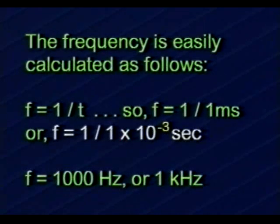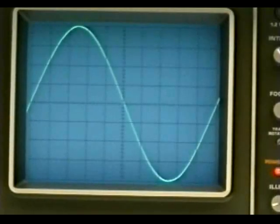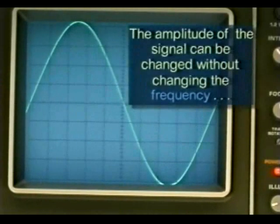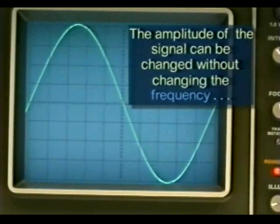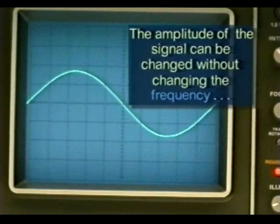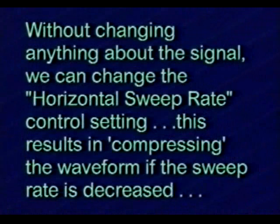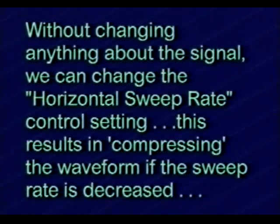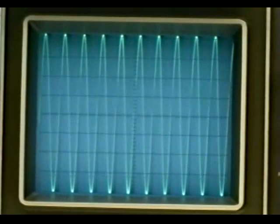In our example, f equals 1 divided by 1 millisecond, or 1 divided by 1 times 10 to the minus 3 seconds, giving a frequency of 1000 hertz or 1 kilohertz. Notice that you can vary the amplitude of the signal without changing its frequency — for example, if this signal were in the audible range, varying the amplitude would change the loudness, but the pitch or frequency would remain constant. Without changing the signal itself, you can change the horizontal sweep rate control setting, which compresses or expands the waveform display, even though the frequency remains constant.